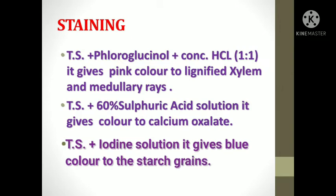After taking a thin transparent section, staining is done with the help of specific microchemical reagents. The first reagent is phloroglucinol plus concentrated HCl in a 1:1 ratio — it gives a pink color to the lignified xylem and medullary rays. The second reagent is 60% sulfuric acid, which gives color to the calcium oxalate crystals. The third reagent is iodine solution, which gives a blue color to the starch grains in the section.